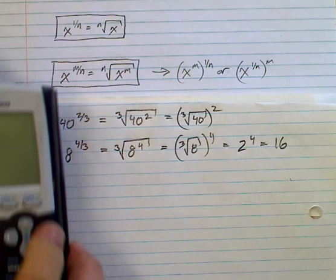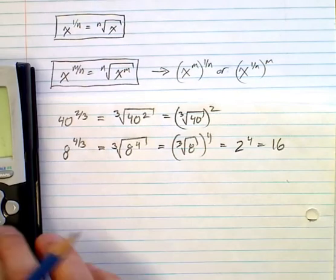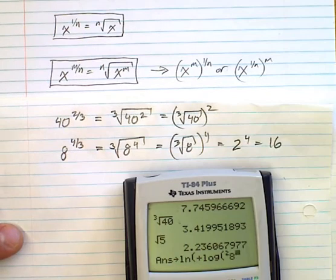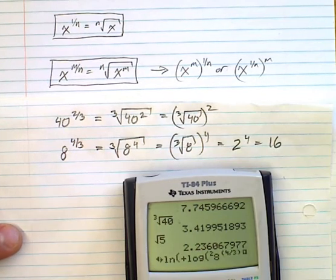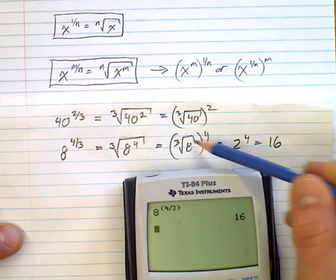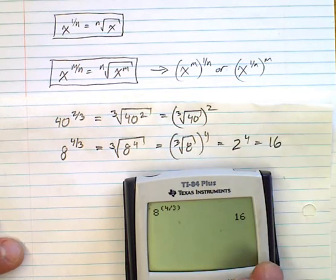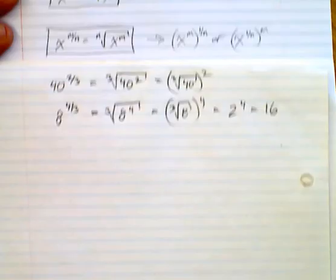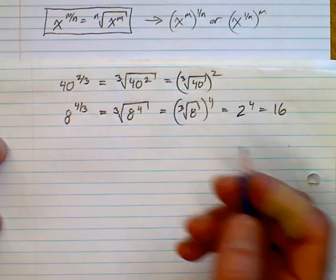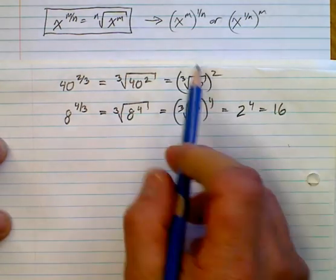We can check: 8 to the power of 4 divided by 3 on the calculator gives 16. You could also do the cube root of 8, get 2, and then raise it to the power of 4. Which way you choose depends on you — which one can you do? Try as many of these as you want.